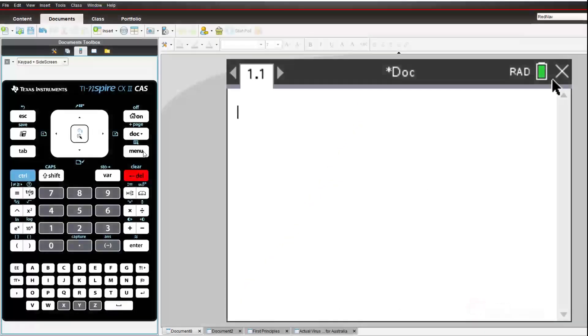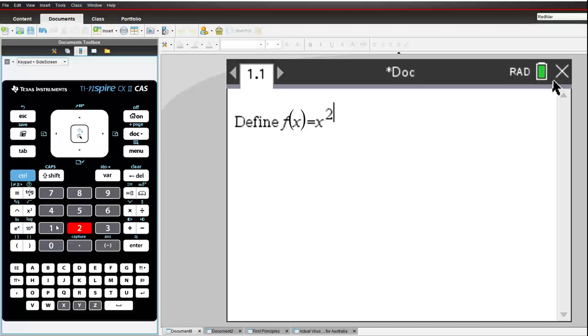So what do these calculations look like? Let's start with the curve y equals x squared. Suppose we want to calculate the gradient when x equals 2. Just like our square and circle example, we can start with something simple, such as the gradient of the secant from x equals 2 to x equals 3.